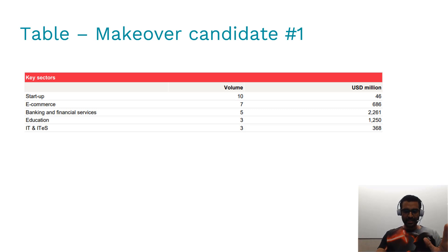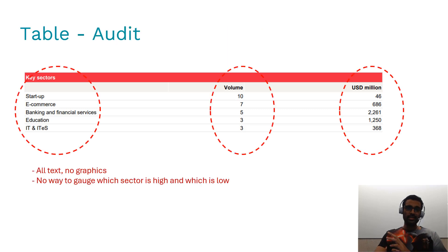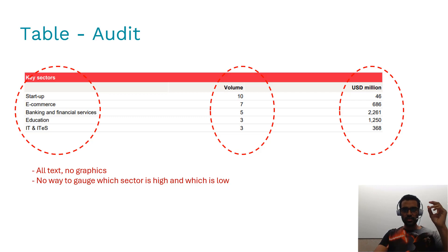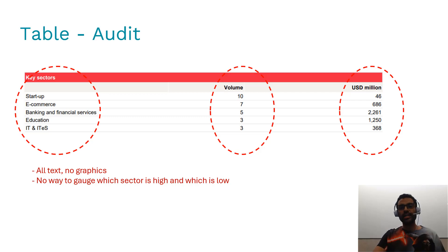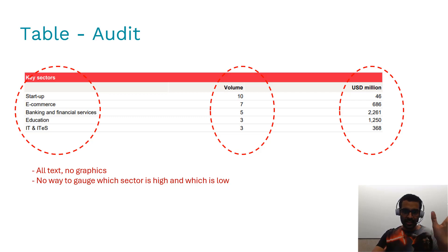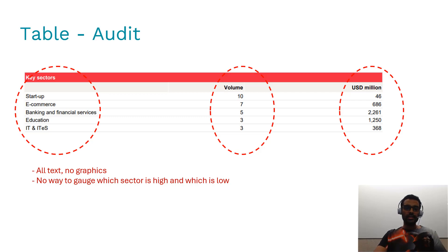This looks like a simple table but there's plenty of scope to communicate insights a lot better. First, there's a lot of text and no visuals. Text is processed by a different part of our brain than visuals — visuals are processed much faster and we get insights more clearly. With text we have to go one by one and search for insights, and there's only a limited amount we can hold in our mind. So there's no visual way to understand which sector is high in deal volume and which is high in deal value.